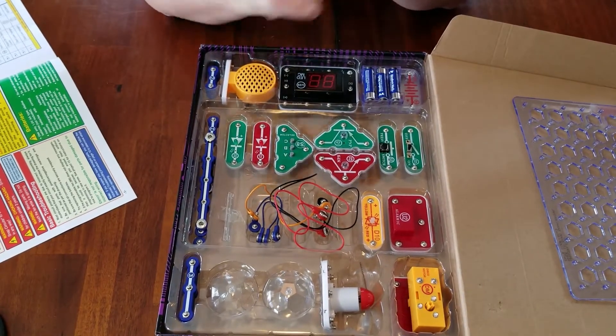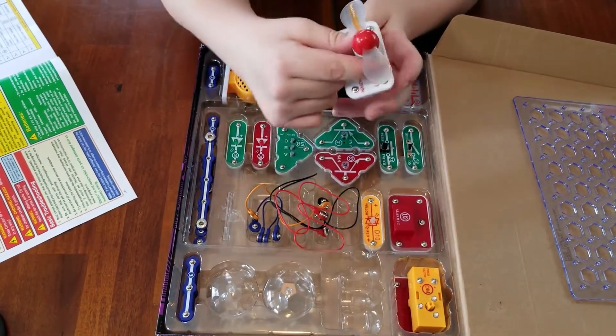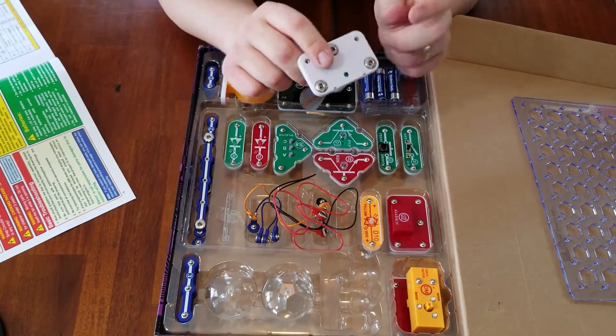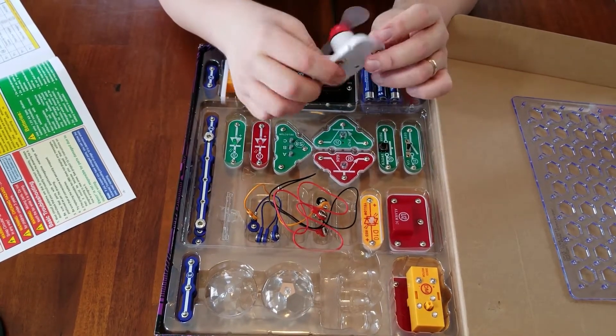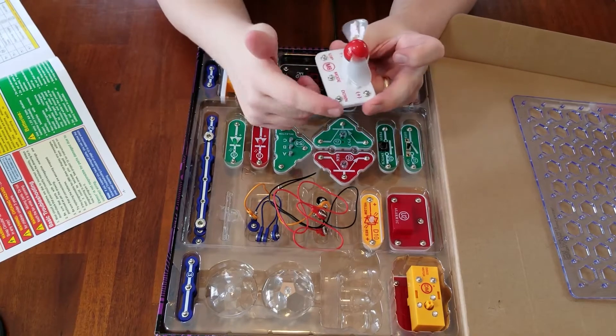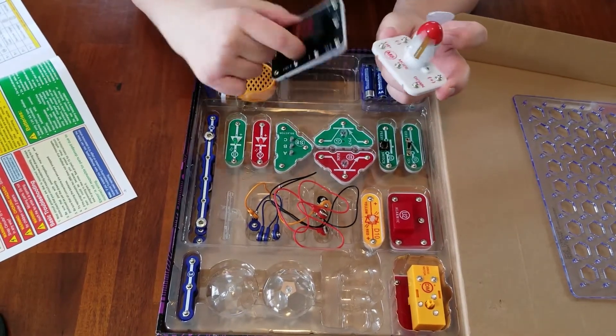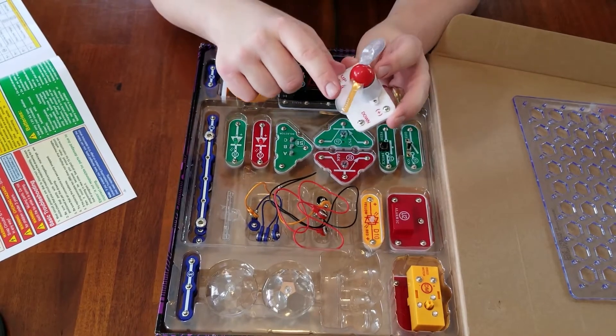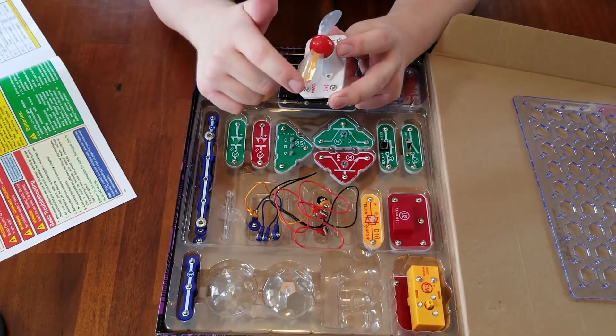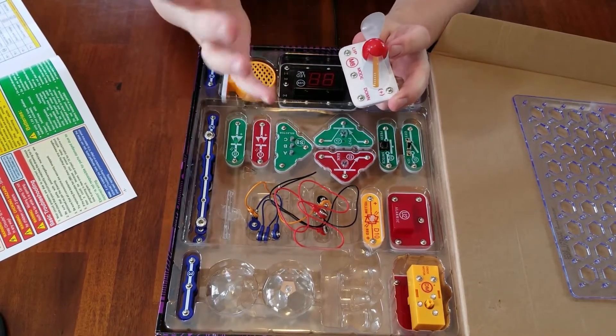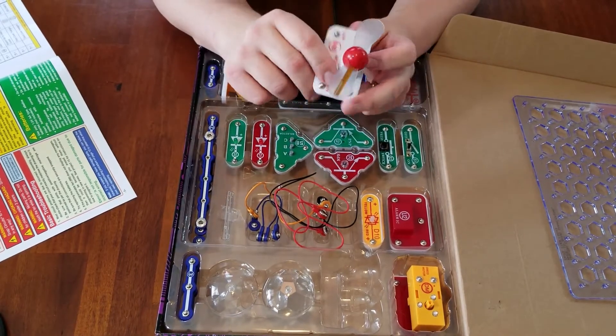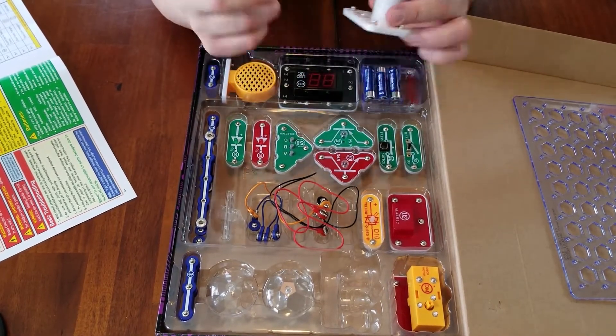The next thing will be the programmable fan. And this snaps on as well to the base. And then you can snap other items onto it. And it's programmable through the microcontroller. And it's got an LED strip right here. And you can make it say messages as the fan is spinning around. It's pretty neat. Kids love this.